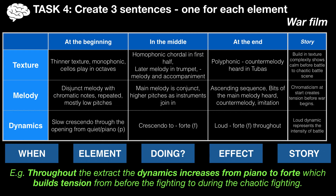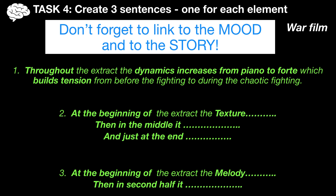I've taken my texture row and turned it into a sentence. 'Throughout the extract, the dynamics increase from piano to forte, which builds tension from before the fighting to during the chaotic fighting.' That's one sentence. Don't forget to link your answer to the mood in the story. Your answer should look something like three sentences — or for the texture row, maybe two or three sentences. Remember it's a war film for me, but it could be something else for you. Pause and finish that.